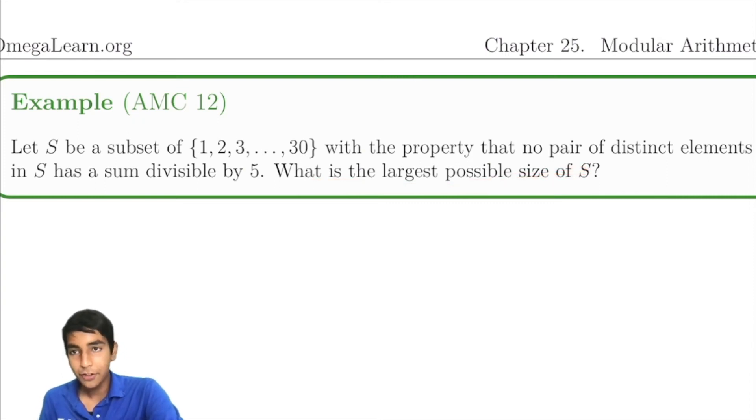For this problem, the key is to realize what does it mean for two numbers to sum to be divisible by 5? The possibilities mod 5 are: we can either have a number that leaves a remainder of 1 when divided by 5, plus another number that leaves a remainder of 4 when divided by 5.